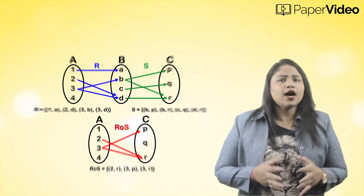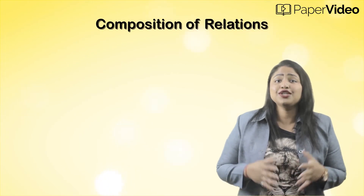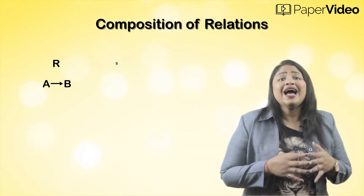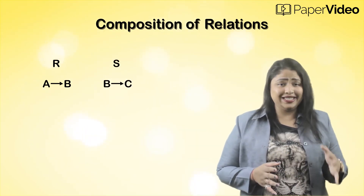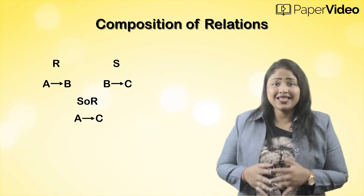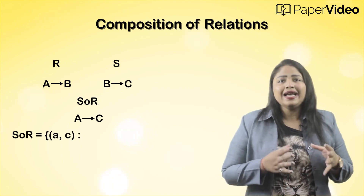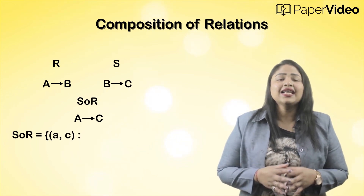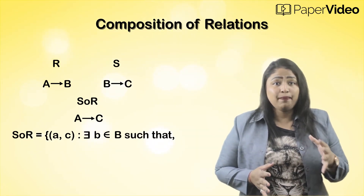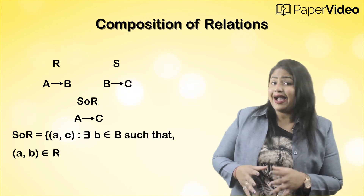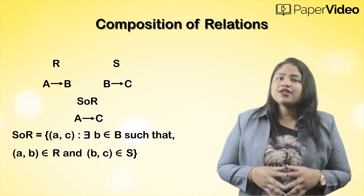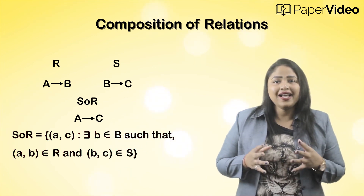Let us now define the composition of relations mathematically. Let R be a relation from set A to set B, and S be a relation from set B to set C. Then we can define a relation S∘R from set A to set C as the set of all ordered pairs (a, c) such that there exists an element b belonging to set B, where the ordered pair (a, b) belongs to relation R and the ordered pair (b, c) belongs to relation S. This relation is called the composition of relations R and S.